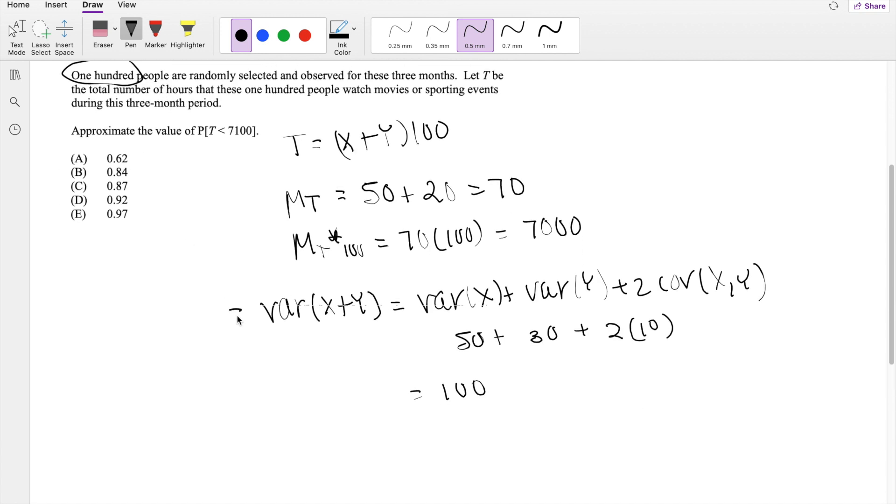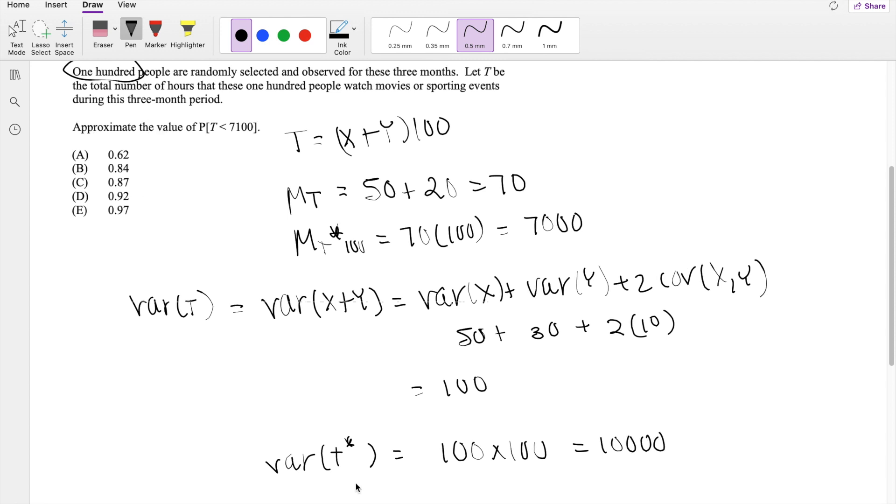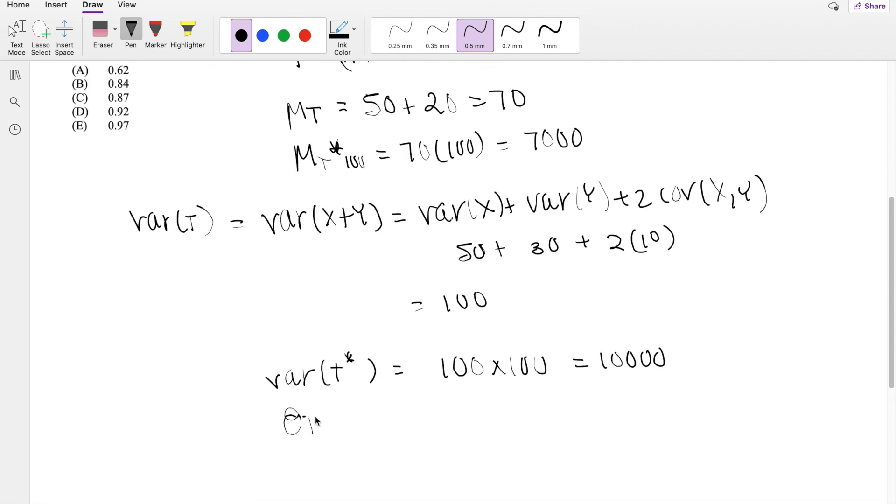This is technically equal to the variance of T, right? But we need the variance of T star, where T star is equal to 100 people. So we just have to multiply this by 100. So this is equal to 10,000. Standard deviation of T star is equal to the square root of variance of T star, which is equal to, right here, this is equal to 100.